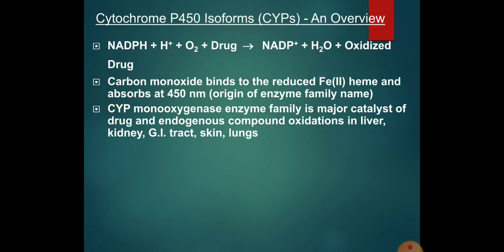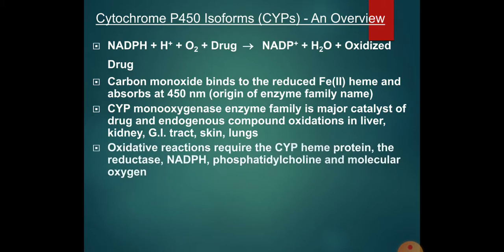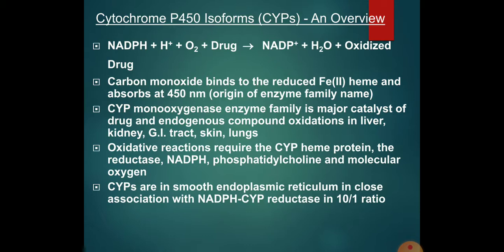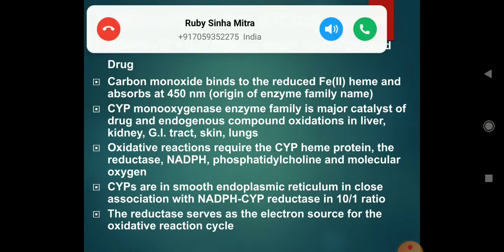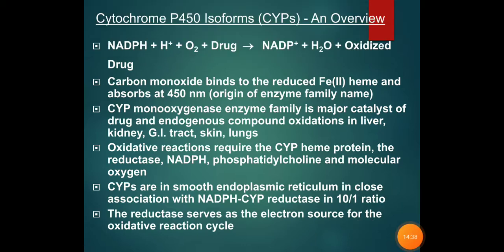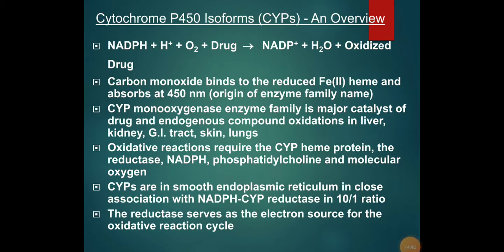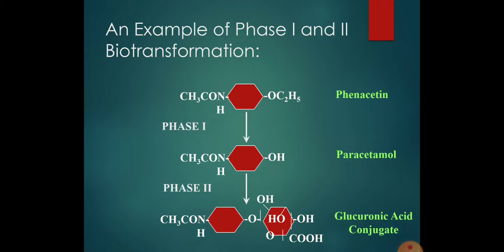Cytochrome P450, also written as CYP, is a hemoprotein. The cytochrome P450 monooxygenase enzyme family is a major catalyst of drug and endogenous compound oxidations in the liver, kidney, GI tract, skin, and lung. Oxidative reactions require the specific protein reductase, NADPH, molecular oxygen, and phospholipid. The enzymes are located in smooth endoplasmic reticulum in close association with NADPH-CYP reductase in a 10:1 ratio. The reductase serves as an electron source for the reaction.